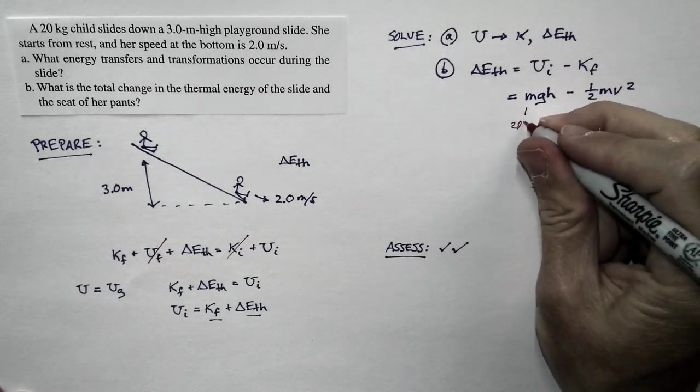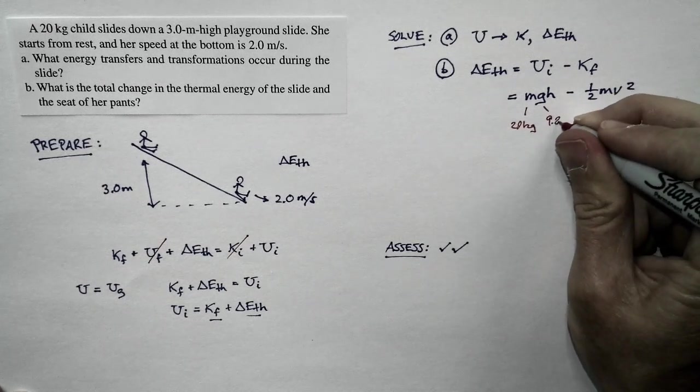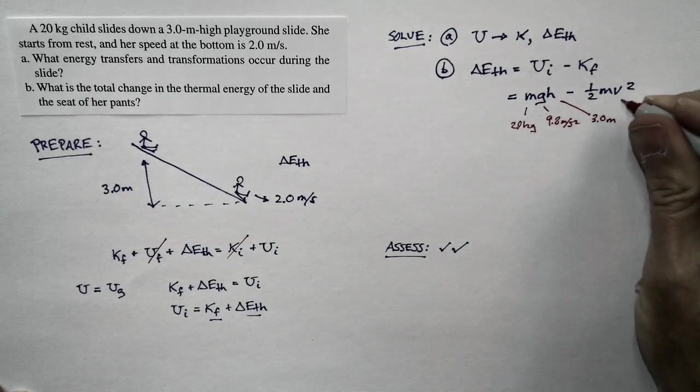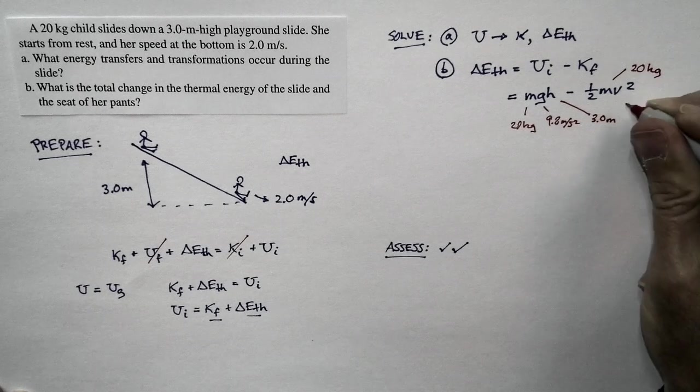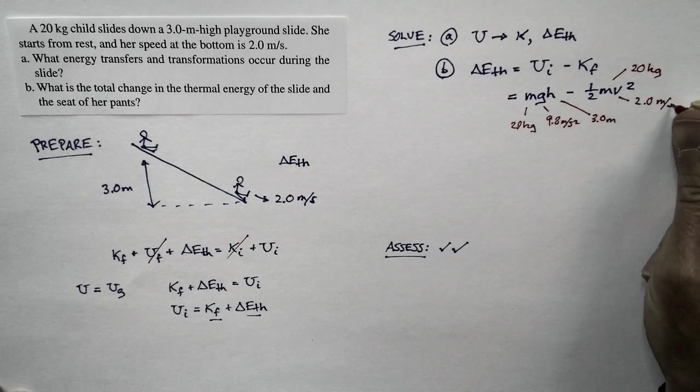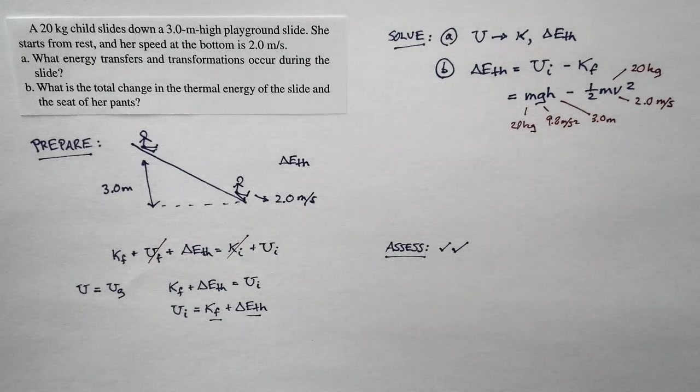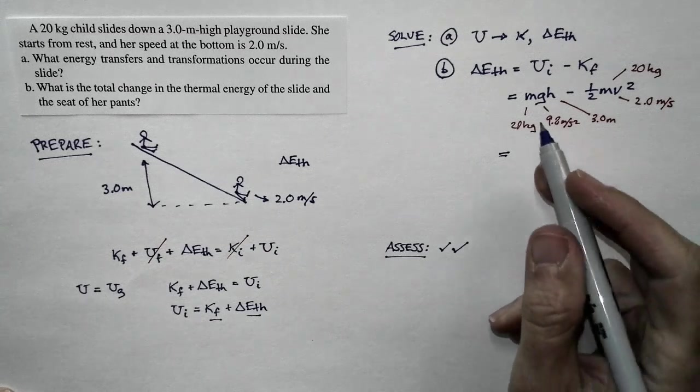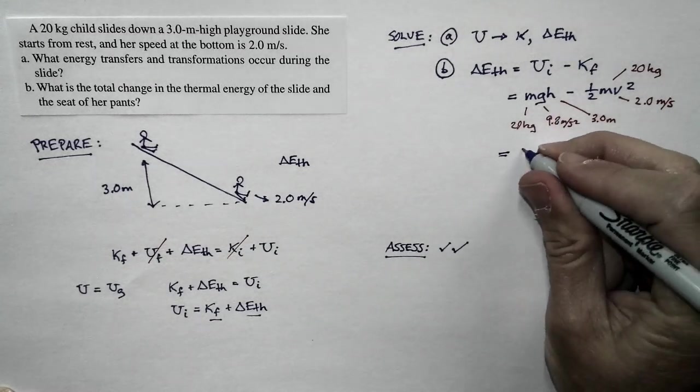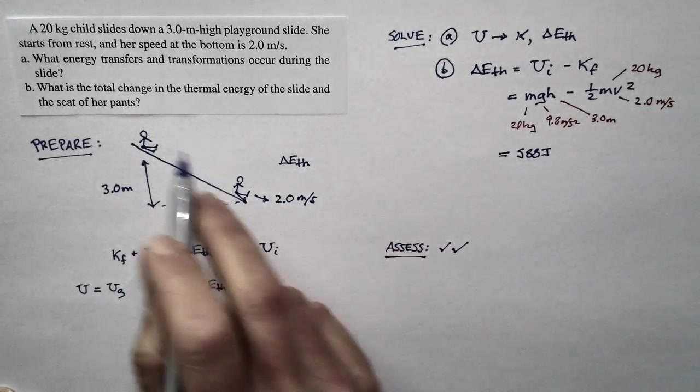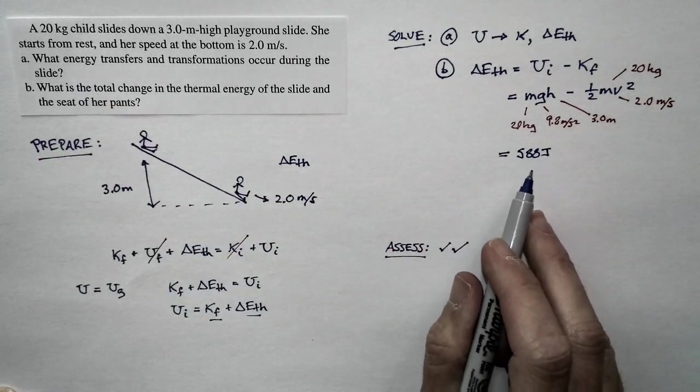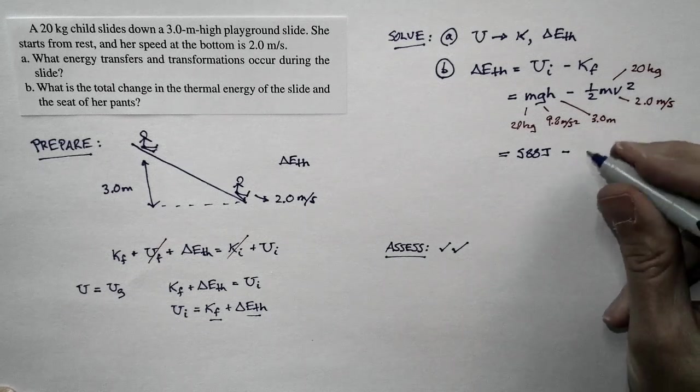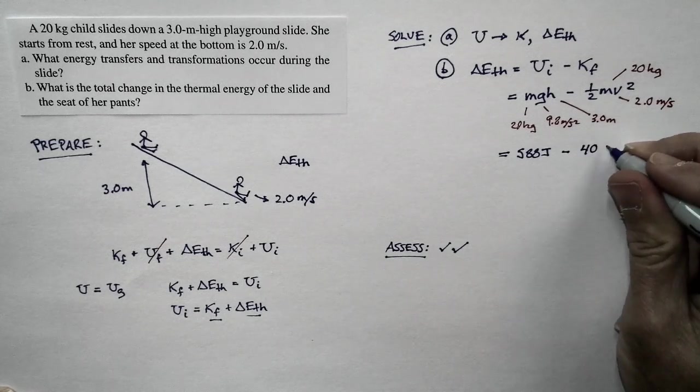We know that her mass is 20 kilograms. G is 9.8 meters per second squared. The height that she starts from is 3.0 meters. Her mass is 20 kilograms. The speed that she ends up at is 2.0 meters per second. So we have all the numbers that we need to calculate these energies. M times G times H, if we work that out, is 588 joules. This is a two significant figure problem, but I'm keeping three significant figures because this is an intermediate stage. One half M V squared, her kinetic energy at the end, is only 40 joules.